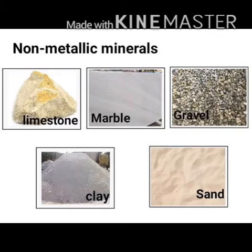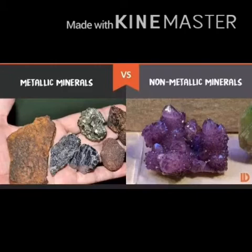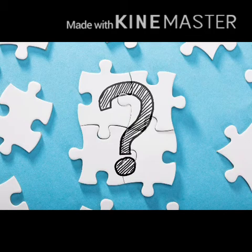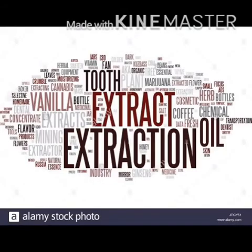The next category is non-metallic minerals. These are minerals which do not have any metallic content. Examples include sulfur, mica, salt, coal, and petroleum. Since metallic minerals are found in igneous and metamorphic rocks, non-metallic minerals are found in sedimentary rocks. These were the two types of minerals: metallic, which are rich in metal content, and non-metallic, which have no metal content.